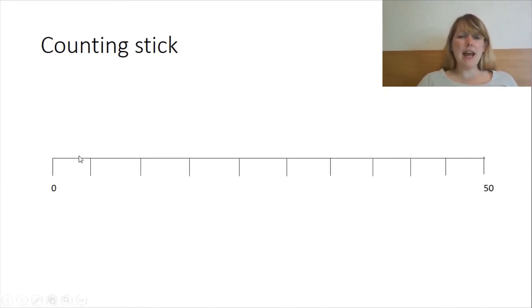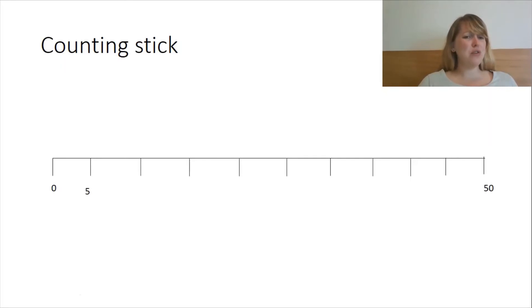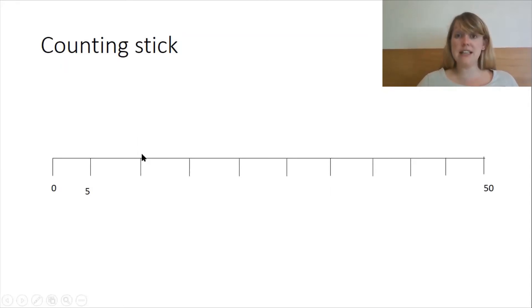Now, what multiplication are we learning? Yes, that's right, 5s. Now, could you double 5? So if 1 times 5 is 5, and we double it, 2 times 5 is — that's right — 10.